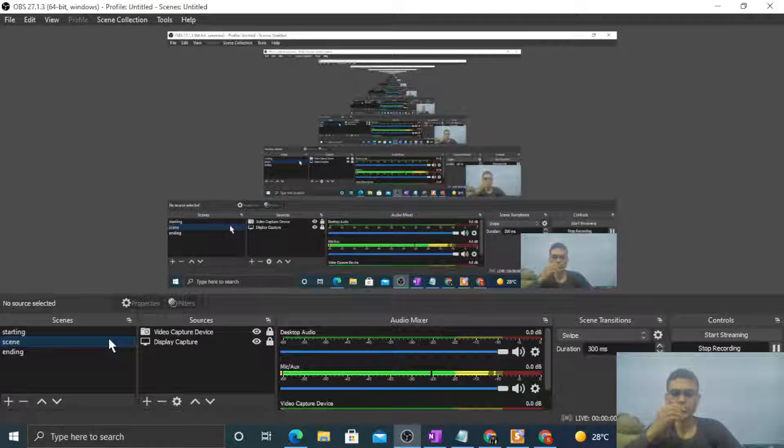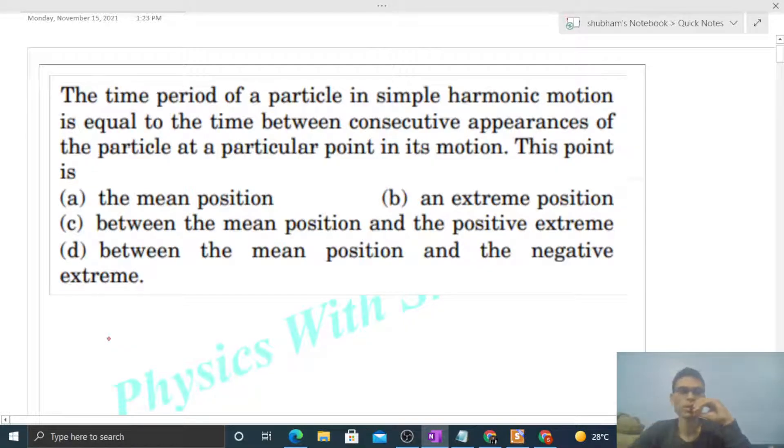Okay, hi everyone. So today let's discuss this interesting problem. It says the time period of a particle in simple harmonic motion is equal to the time between consecutive appearances of the particle at a particular point in its motion.